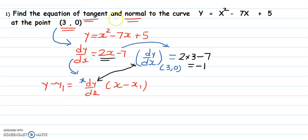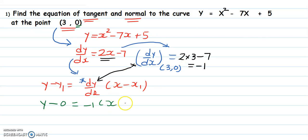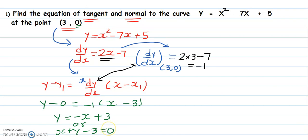So our equation of tangent: y remains y, y1 is 0, dy by dx at the point is minus 1, and x1 is 3 — never touch x. So y minus 0 equals minus 1 times x minus 3, giving y equals minus x plus 3, which can also be written as x plus y minus 3 equals 0. This is our equation of tangent.